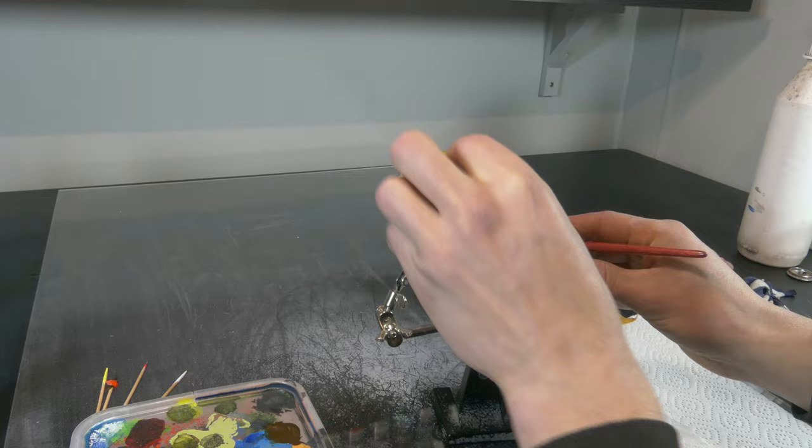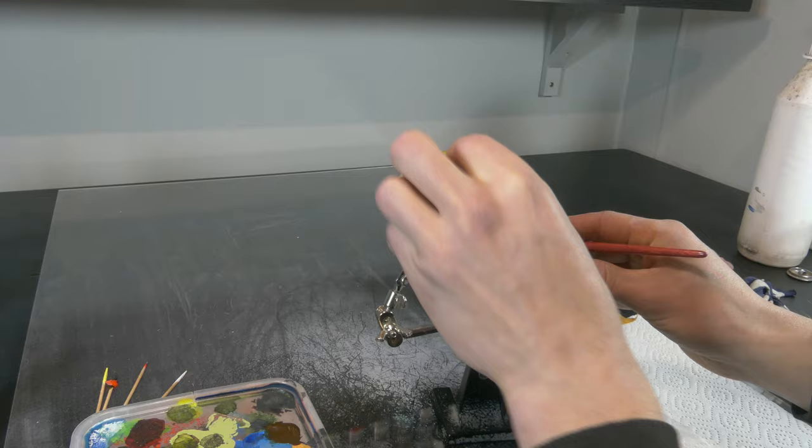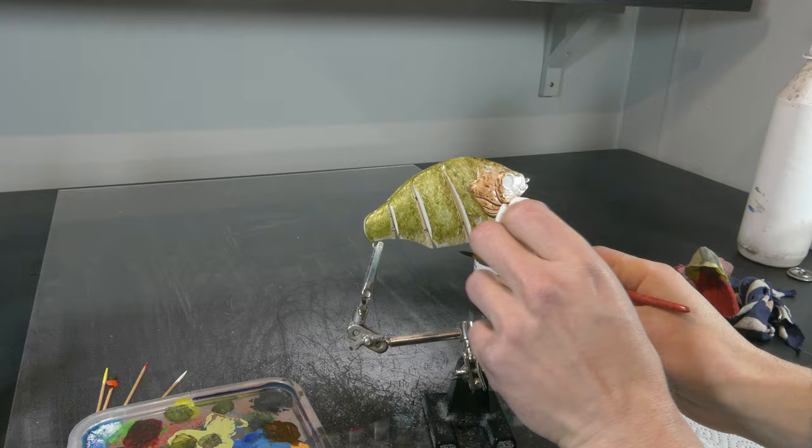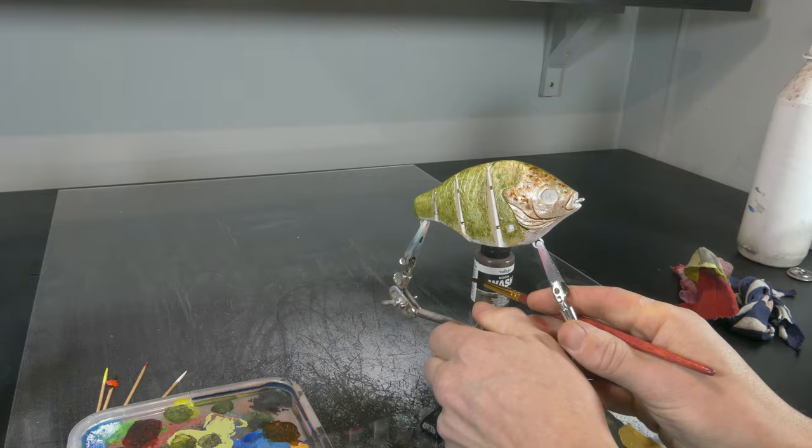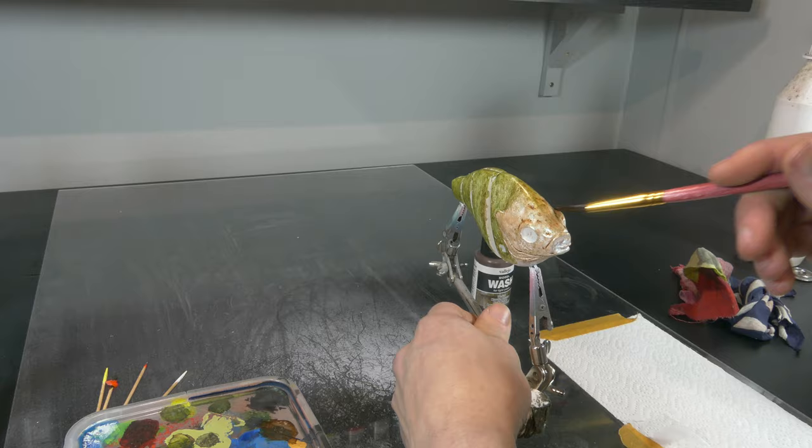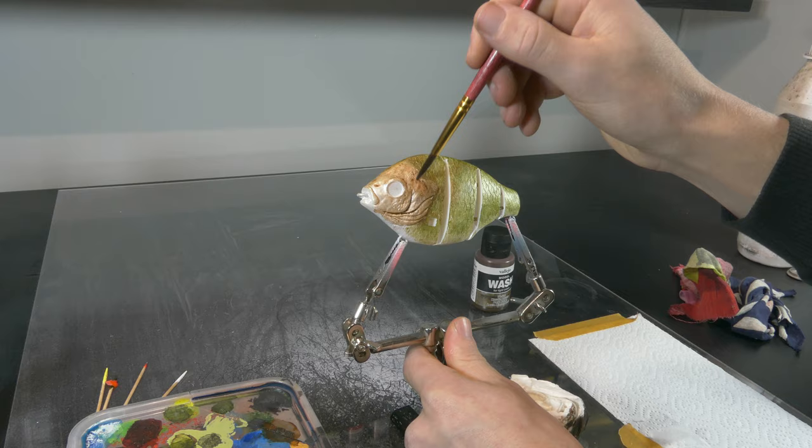Now I'm again using Vallejo model wash brown to create the first depth and texture onto our head. I'm really pushing that wash into the gill plates so that we get a really nice dark tone there, and I'm trying to keep the gill plate itself very light. And I'm also stippling a little bit of my wash here and there and let that dry to create a little bit of extra texture.